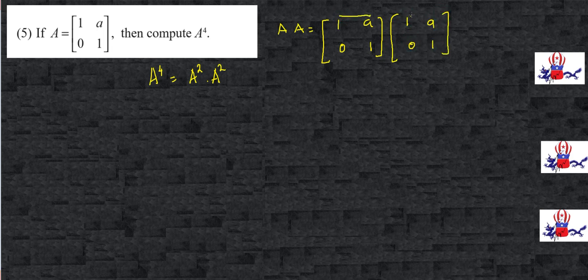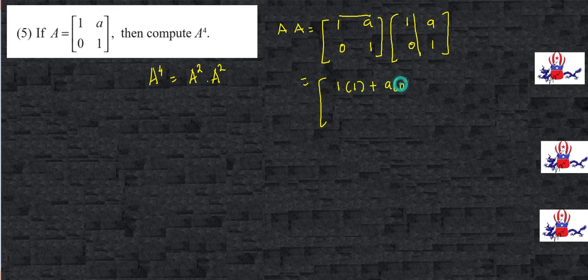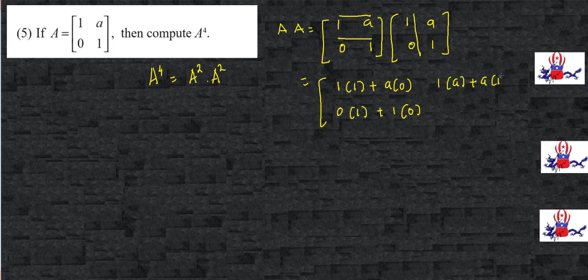Multiply the row with the column. That would give: 1 multiplied with 1, plus a multiplied with 0; then 0 multiplied with 1, plus 1 multiplied with 0. Following up: 1 multiplied with a, plus a multiplied with 1; then 0 multiplied with a, plus 1 multiplied with 1.